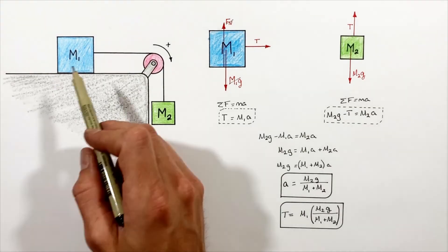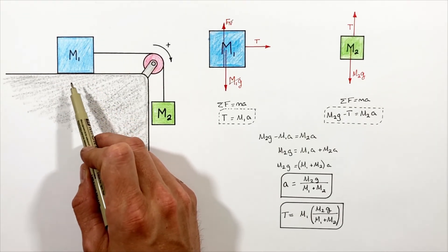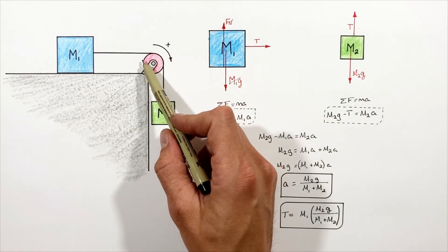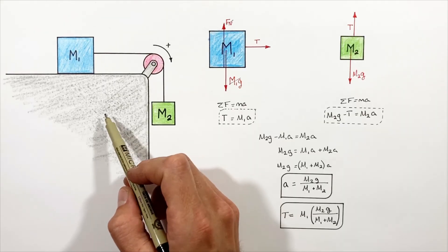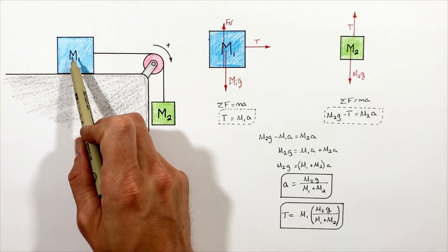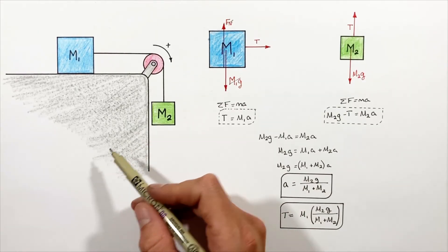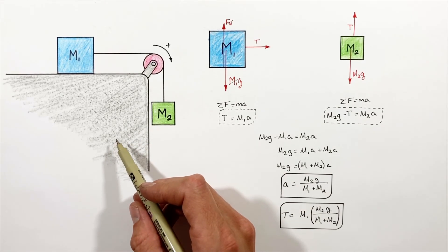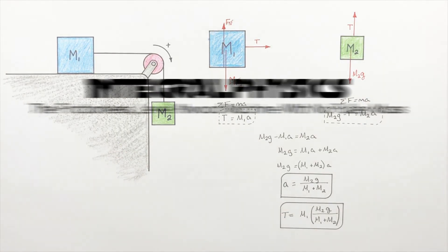In this problem we've solved for the acceleration of both blocks and the tension in the string connecting them — but this depends on the table block having no friction against the level surface, and the pulley having no mass or friction. If you want to see more complicated variants worked out, such as with friction between the block and the surface or with pulley mass, those videos are on my channel with links in the description. That's all for now.